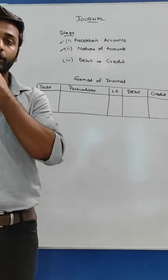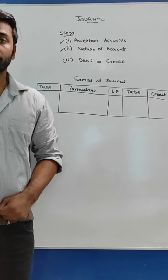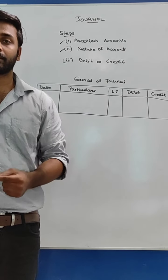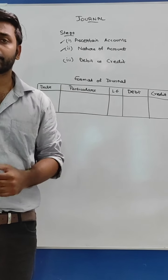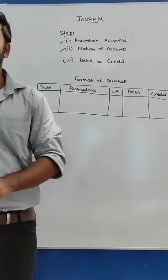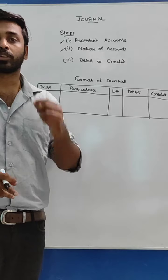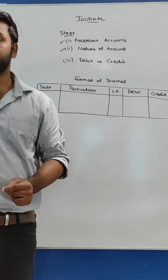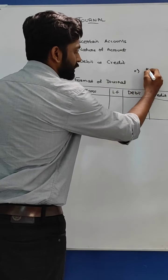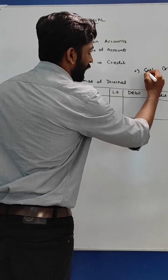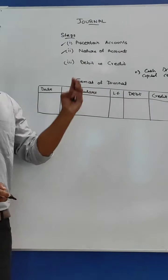The third step is to ascertain whether each account is debit or credit. Cash is brought into the business as capital, so capital increases — when capital increases, capital is credited. Cash is an asset and the asset increases — so cash is debited. Therefore, the journal entry is: cash account is debited and capital account is credited.